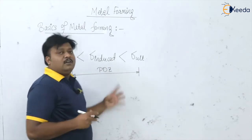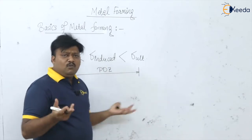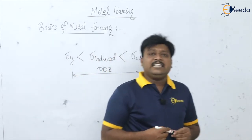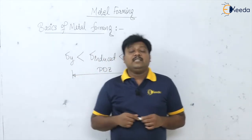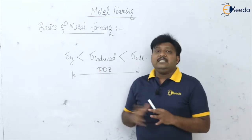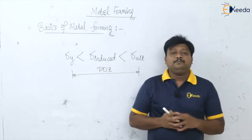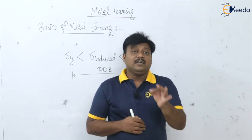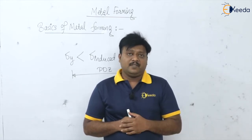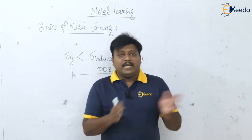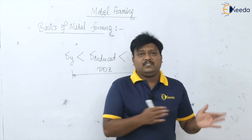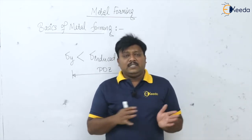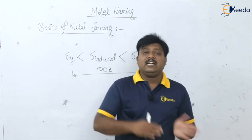In this zone we want more and more deformation to have the change in size and shape of the product. This is plastic deformation - this is simple metal forming. Now if you look at the casting process, which we have just seen, what is the basic difference between casting and forming?